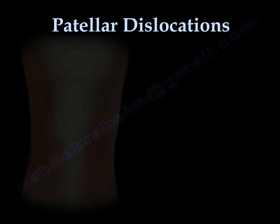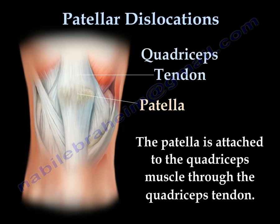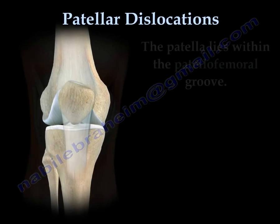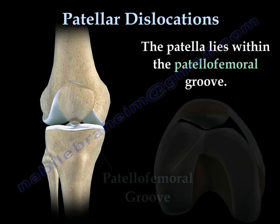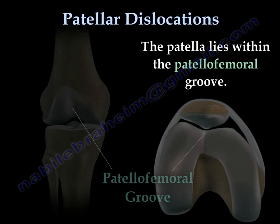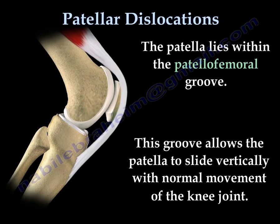Patellar Dislocations. The patella is a protective bone located in front of the knee joint. It is attached to the quadriceps muscle through the quadriceps tendon. It facilitates the function of the quadriceps muscle to straighten the knee. It lies within the patellofemoral groove, which allows the patella to slide vertically with normal movement of the knee joint.